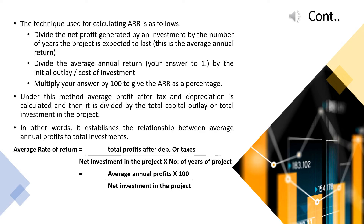Under this method, average profit after tax and depreciation is calculated and then divided by the total capital outlay or total investment of the project. In other words, it establishes the relationship between average annual profit and total investment. Average rate of return equals total profit after depreciation and taxes divided by net investment in the project, divided by number of years of project — or equivalently, average annual profits multiplied by 100 divided by net investment in the project.